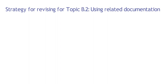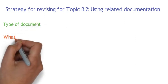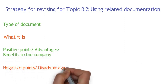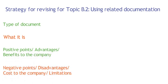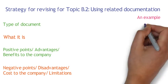These are some strategies for revising for Topic B2, which is using relative information. I would say: pick a type of document and explain what are the positive points, benefits, advantages, benefits to the company, negative points, disadvantages, cost to the company, and limitations. When you're revising, go through as many types of documents as you can think about.